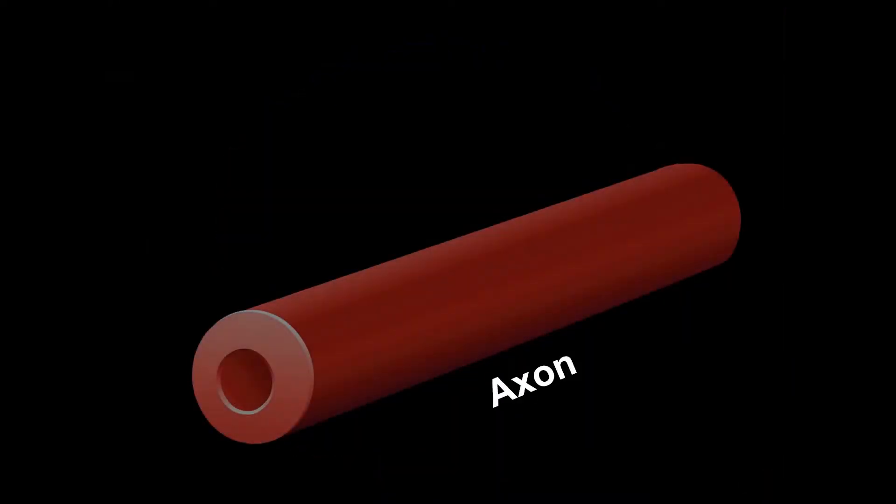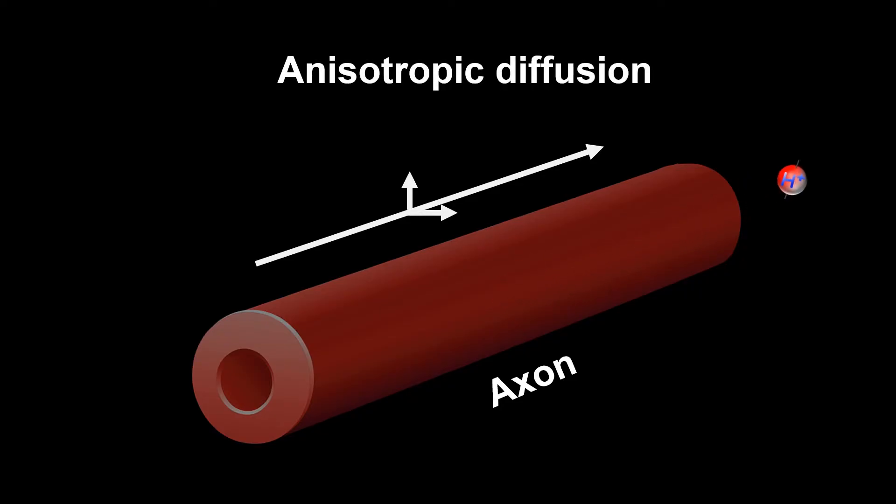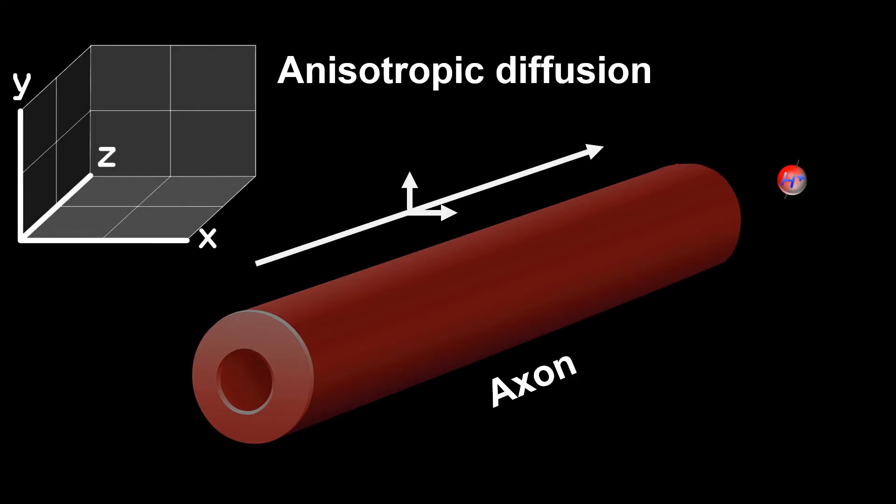Axons in the white matter resemble tubes or tunnels. This means that hydrogen protons in the axons can move freely along the direction of the axon, but are much more restricted from side to side. This is what we call an isotropic movement, and to measure it, we need to observe all three dimensions of a 3D space.